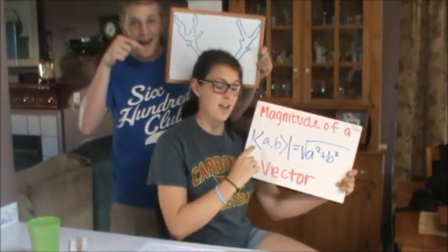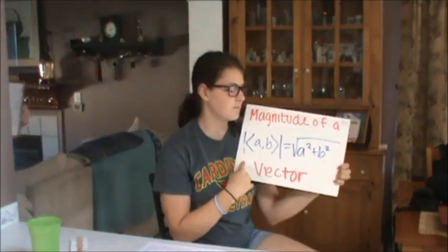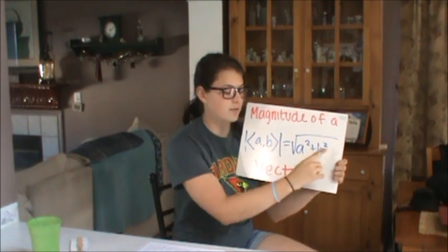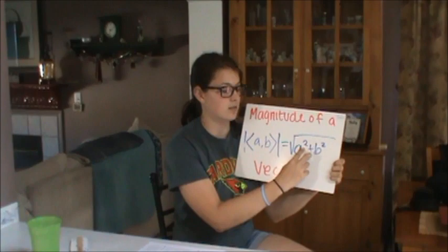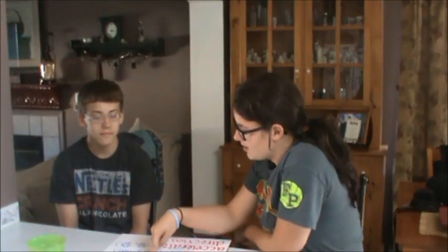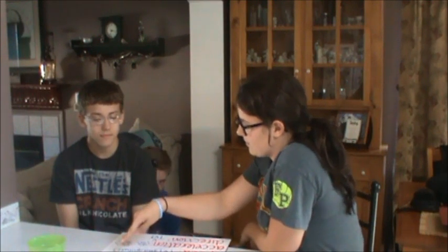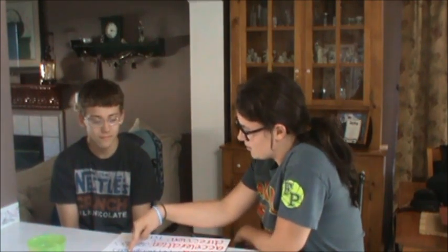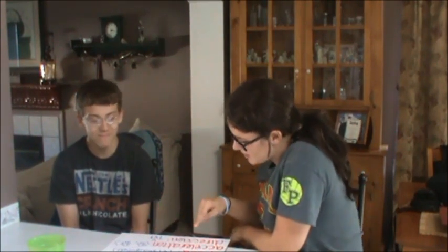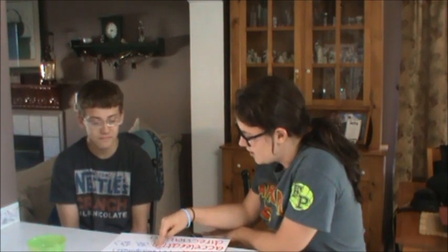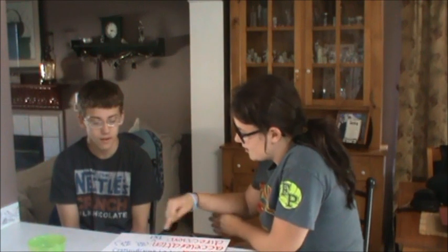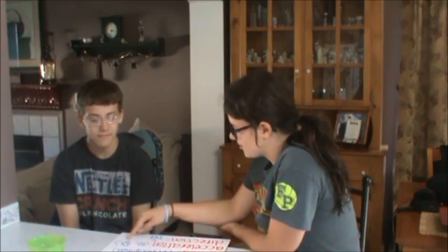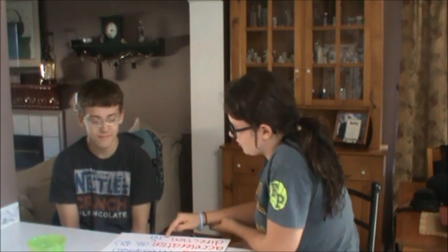The magnitude of a vector is the same thing as the absolute value of the vector, which equals the square root of your two points with each of your points squared. Your position vector, represented as r(t), is just your x and y coordinates in t values. Your velocity vector is the derivative of each of your x and y values in terms of t. Your speed is the same thing as magnitude. Your acceleration is your double derivatives of each of your x and y values in terms of t. And your direction is your velocity over your speed.